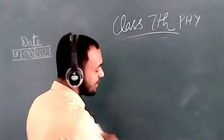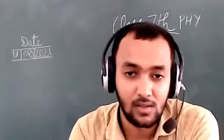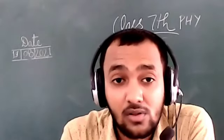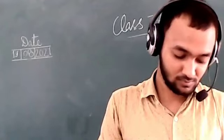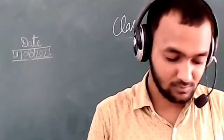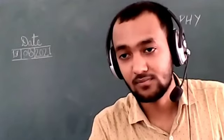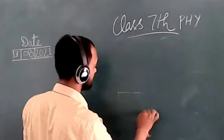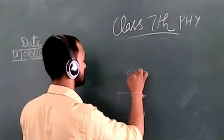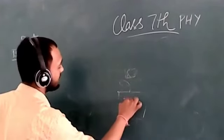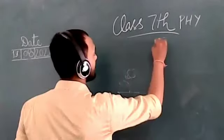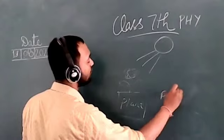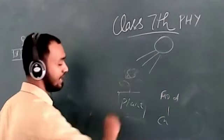Light energy is converted into chemical energy — an example is photosynthesis in plants. A plant receives the light energy of the sun and prepares food using photosynthesis. The energy stored in the food is chemical energy — so light energy is converted into chemical energy.